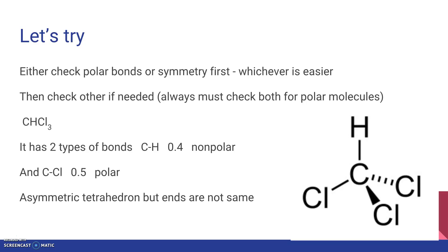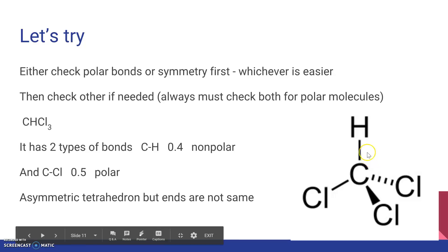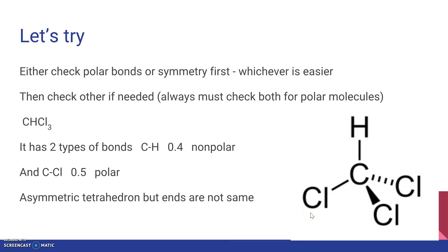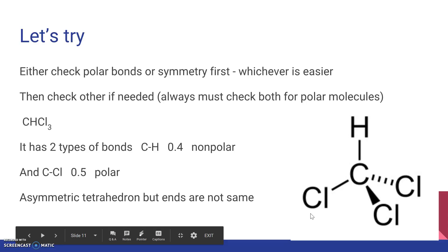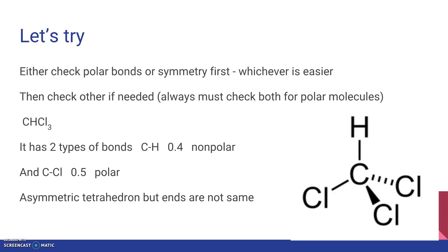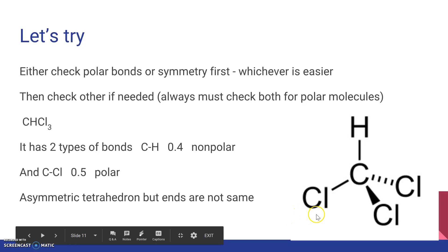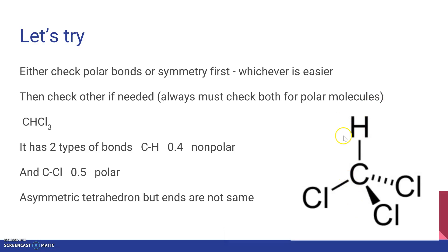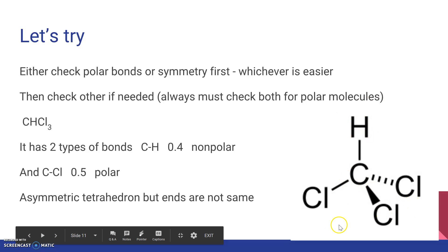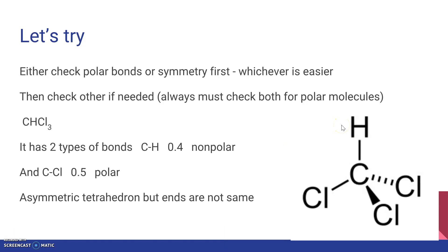Now we have to decide if CHCl3 is symmetrical or not. It is a tetrahedron, but the ends are not the same — you have a hydrogen on one end and three chlorines on the other end. So this is not symmetrical; it is asymmetrical. For both reasons — it has one polar bond and it is asymmetrical — this molecule itself is polar. The bottom part of the molecule pulls on the electrons more than the top, so the Cl side becomes slightly negative and the H side becomes slightly positive.